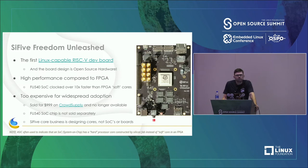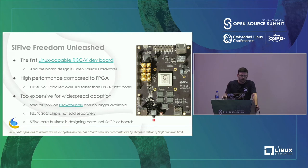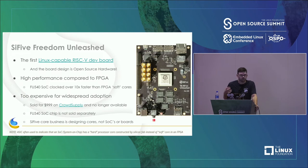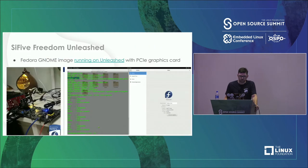A board some may have seen — I think first at ELC 2017 in Portland — was the SiFive Freedom Unleashed. This was the first board Linux ran on, with a 64-bit RISC-V SoC from SiFive. Because it was a hard ASIC processor, not an FPGA, it ran much faster than the FPGA soft-core implementations before it. However, it was $1,000, is no longer made, and the chip wasn't sold separately since SiFive's business is designing IP, not making chips and boards.